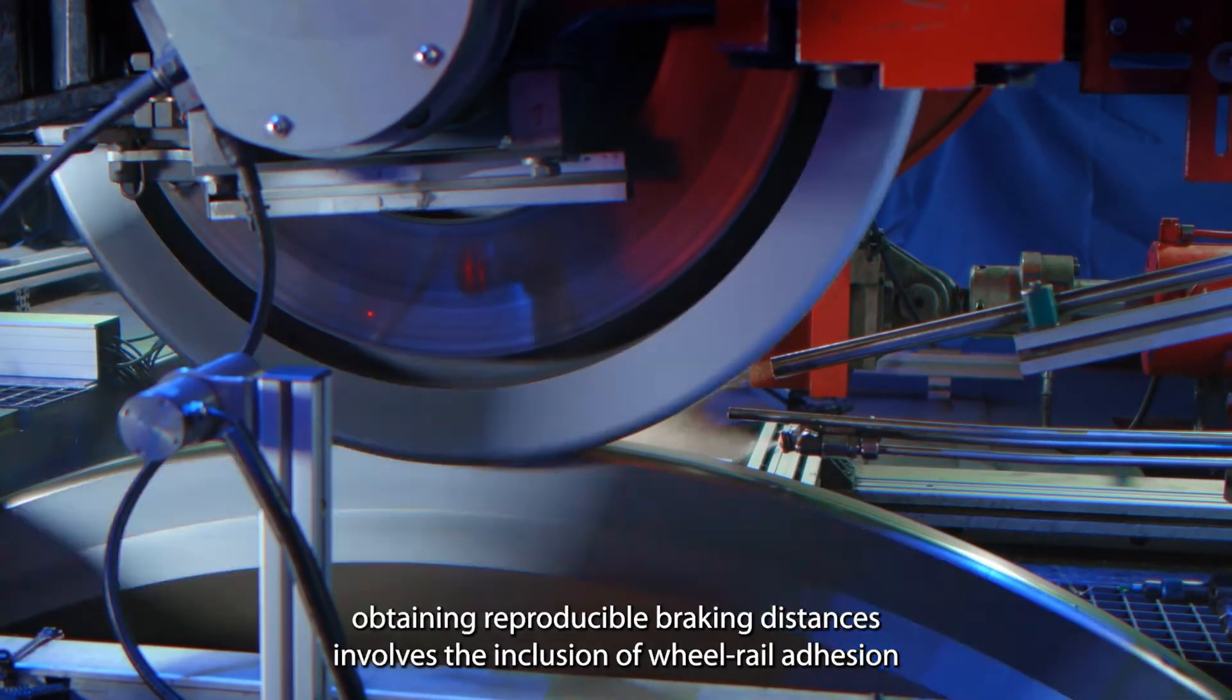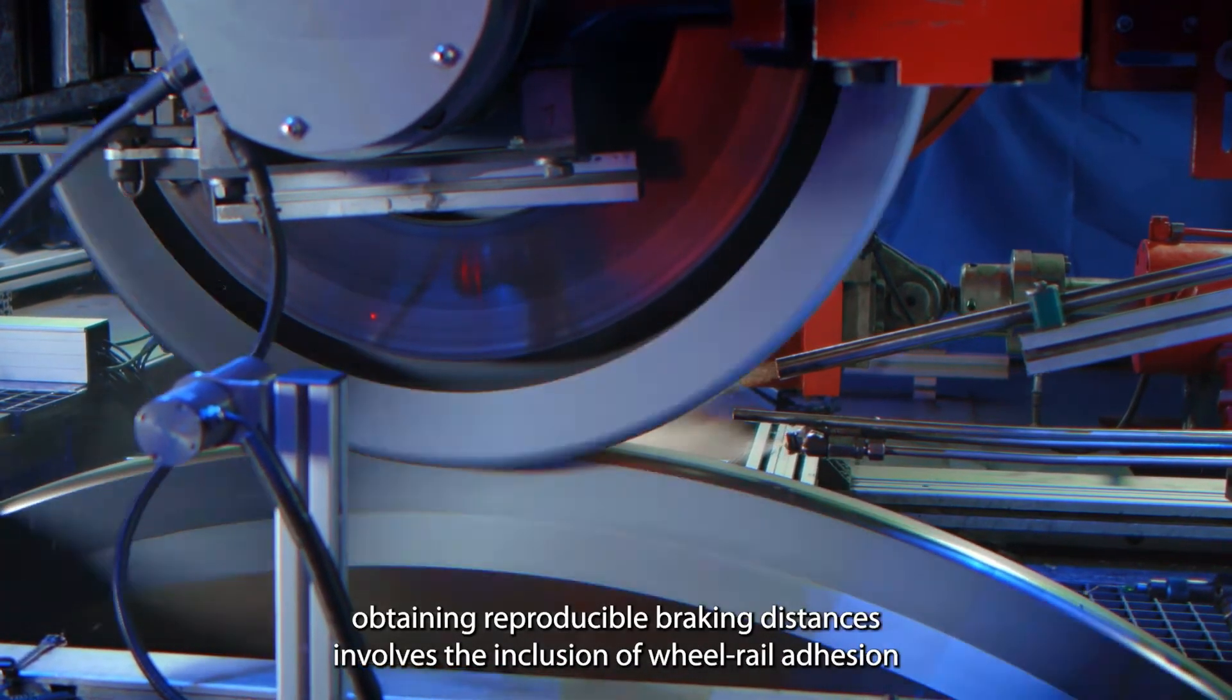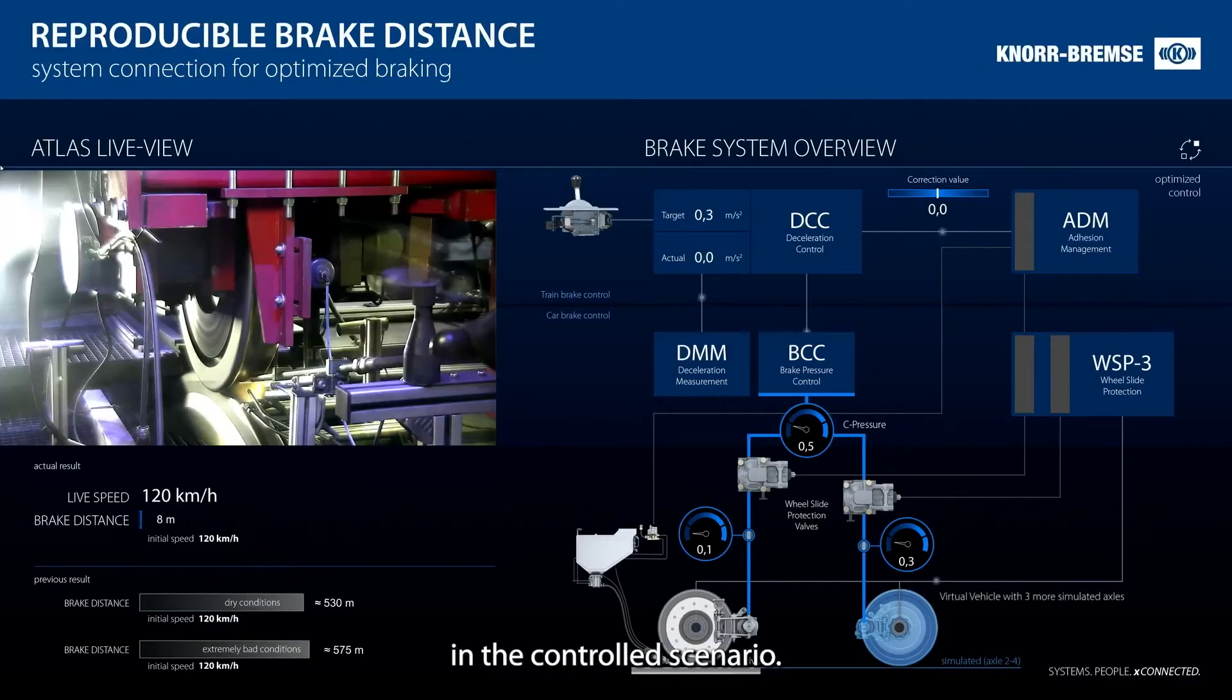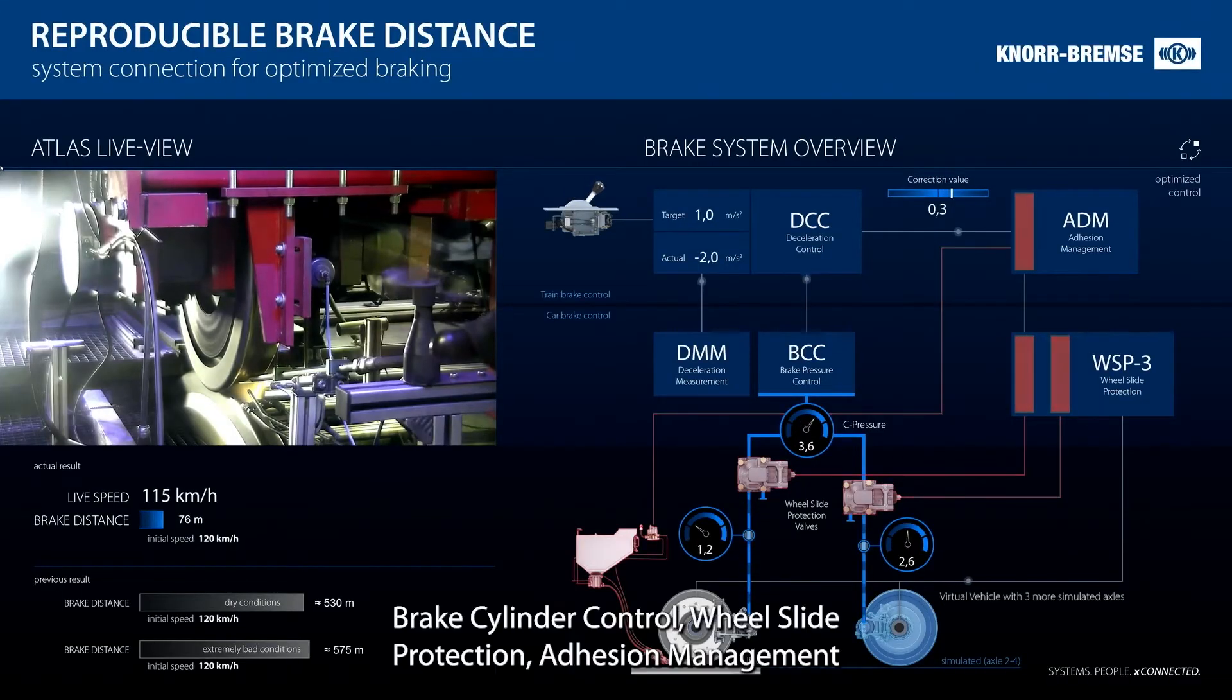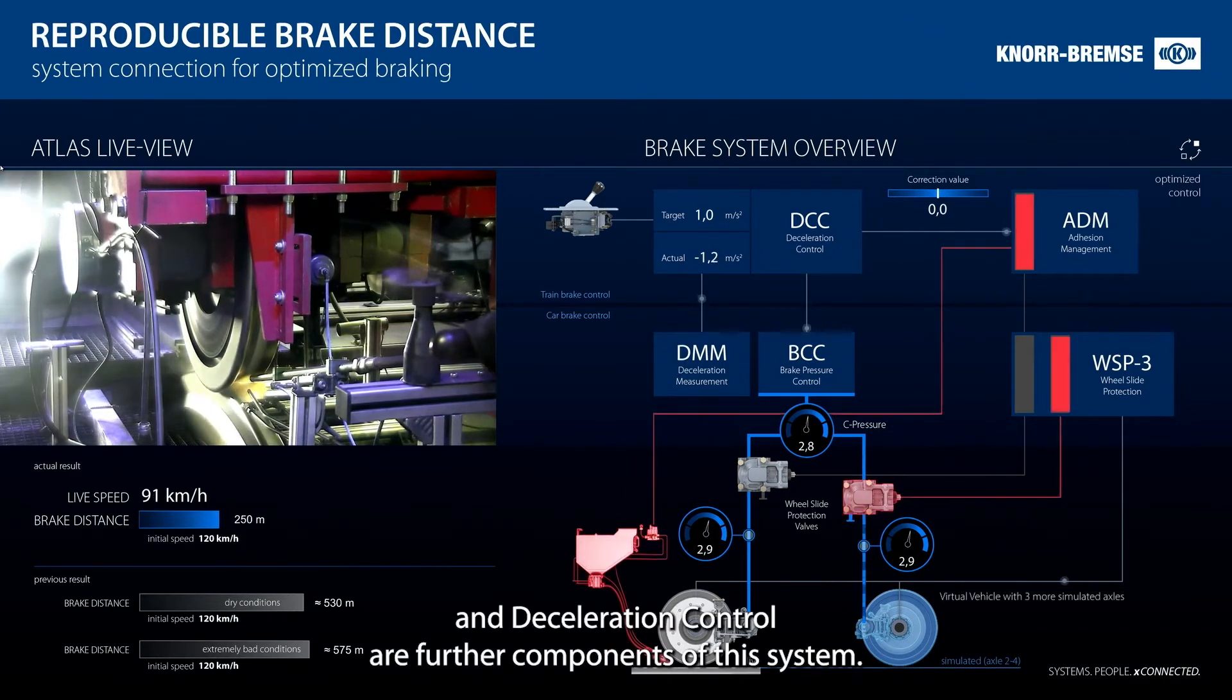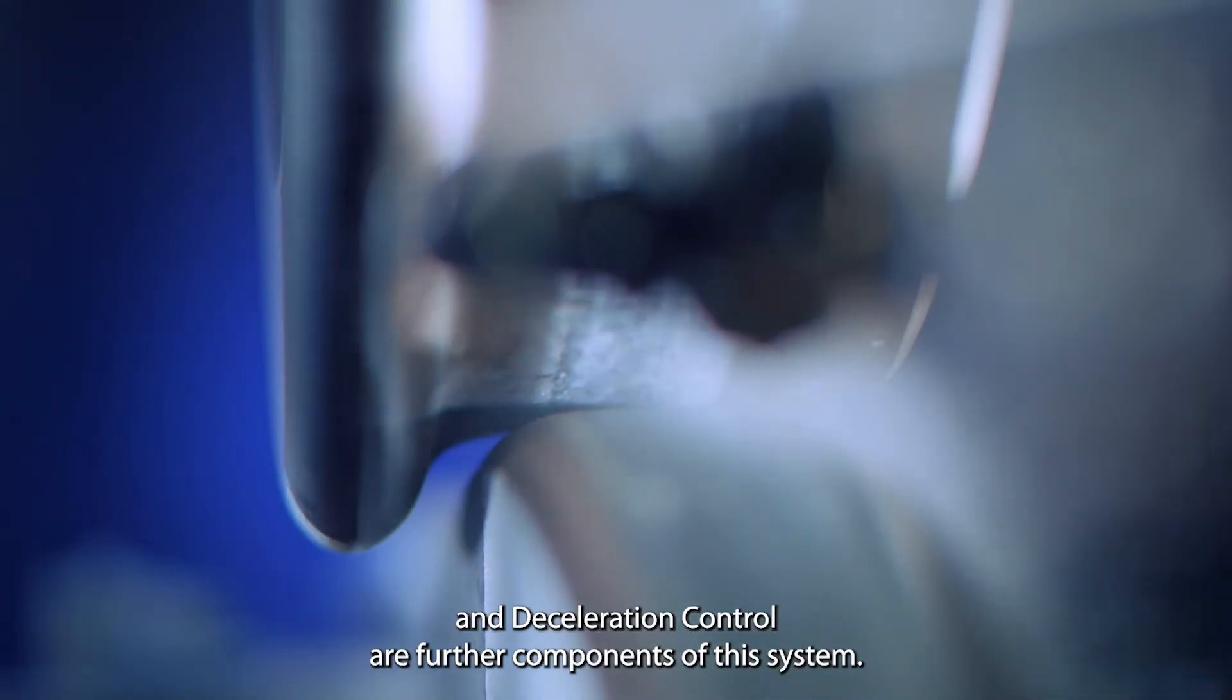The new approach to obtaining reproducible braking distances involves the inclusion of wheel-rail adhesion in the controlled scenario. Brake cylinder control, wheel slide protection, adhesion management and deceleration control are further components of this system.